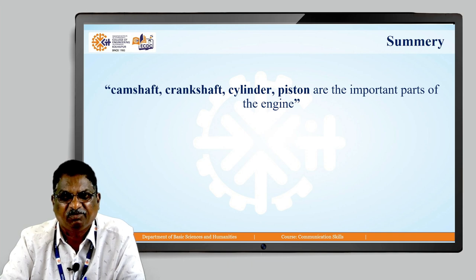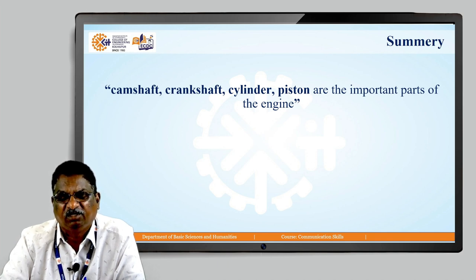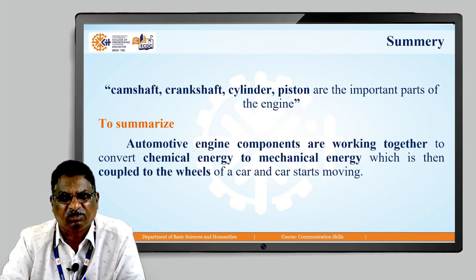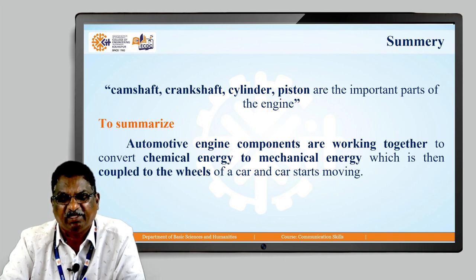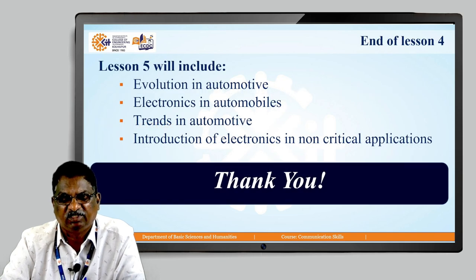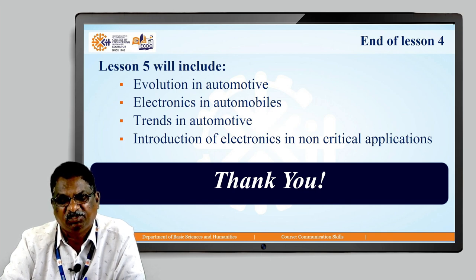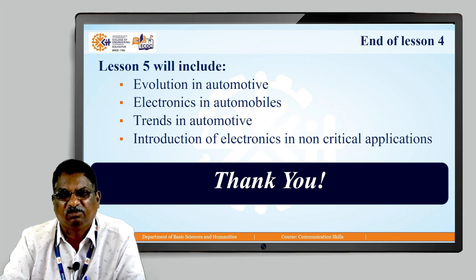Summary: camshaft, crankshaft, cylinder, and piston are important parts of the engine. All automotive engine components work together to convert chemical energy to mechanical energy, which is then coupled to the wheels so the car starts moving. This is the end of lesson 4. In lesson 5, you will study Evolution in Automotive, Electronics in Automobiles, Trends in Automotive, and Introduction of Electronics in Non-Critical Applications. Thank you very much.